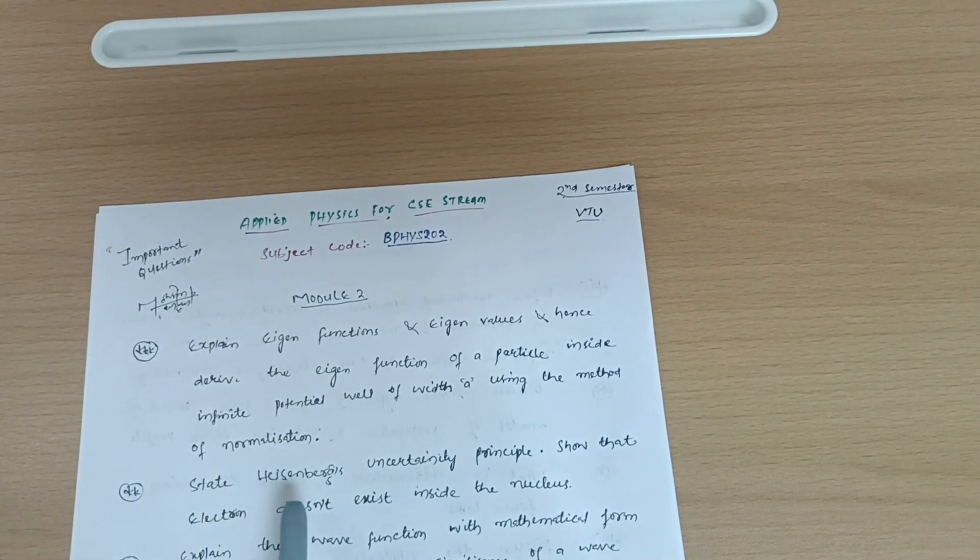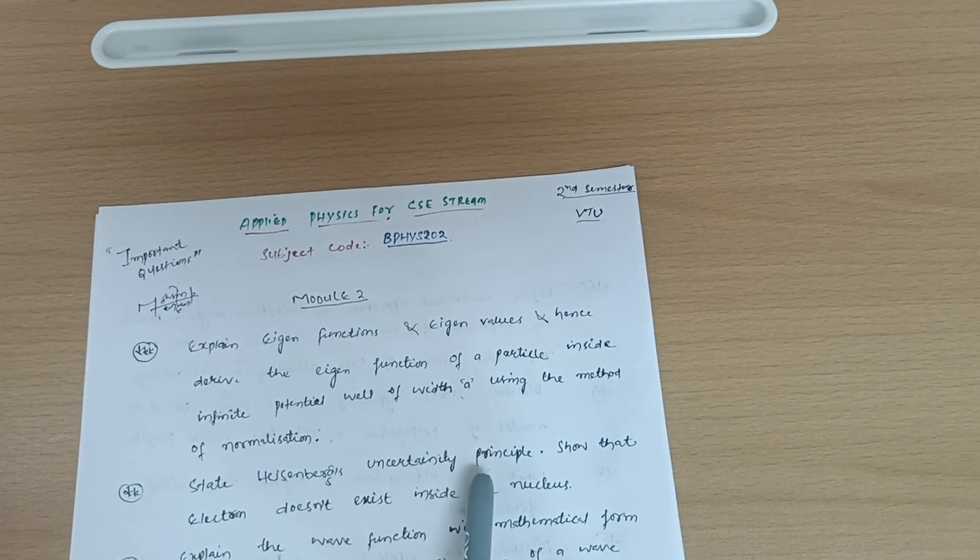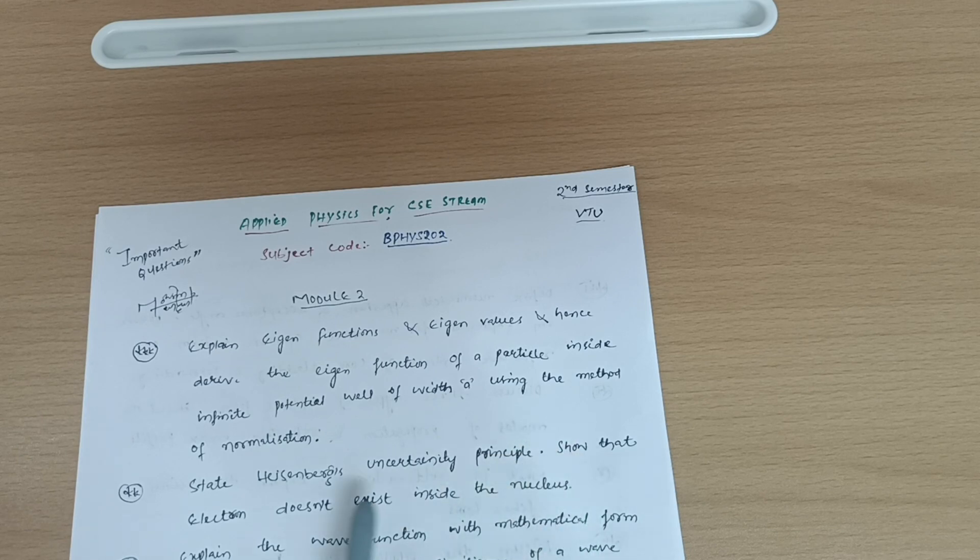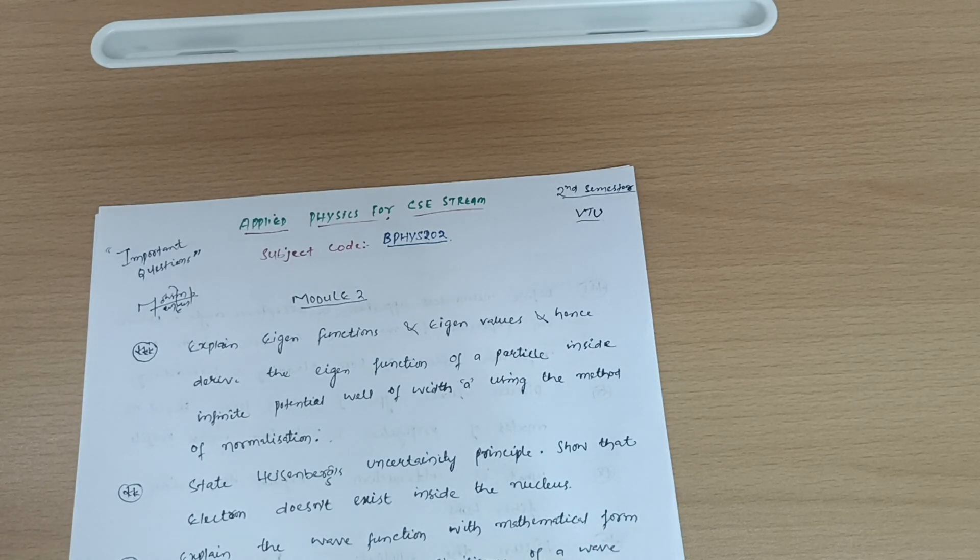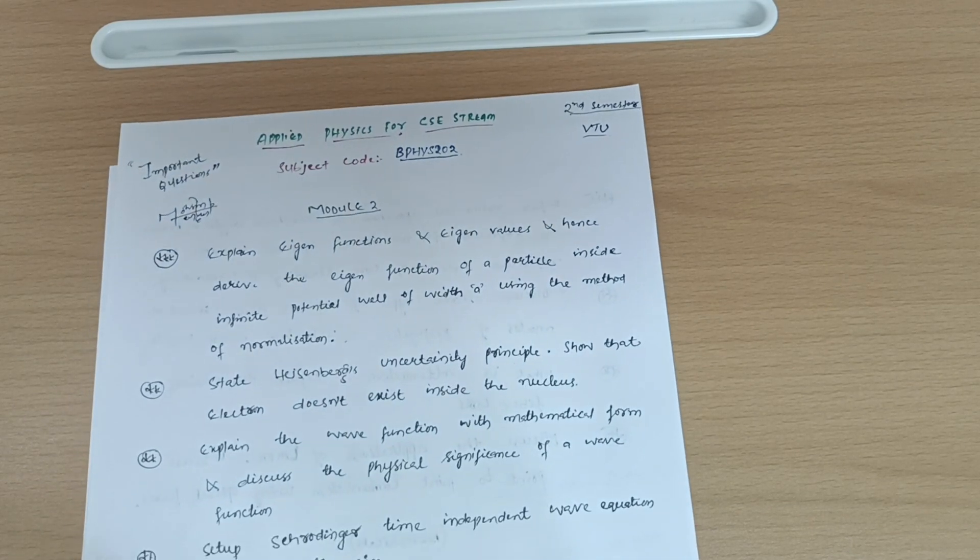Next is state Heisenberg's uncertainty principle. This is again super important. Show that electron does not exist inside the nucleus. Next is explain the wave function with the mathematical form and discuss the physical significance of a wave function.